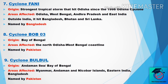The eighth one is Cyclone Pabuk, which originated from the Andaman Sea and Bay of Bengal. Areas affected are Myanmar, Andaman and Nicobar Islands, eastern India, and Bangladesh. The name was suggested by Pakistan.